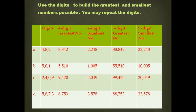Now let us do a question to check whether we have understood the topic clearly. Use the digits to build the greatest and smallest numbers possible. You may repeat the digits. Part A: the digits are 4, 8, and 2. The greatest four-digit number formed will be 8,842 and the smallest four-digit number will be 2,248. The greatest five-digit number formed will be 88,842 and the smallest five-digit number would be 22,248.